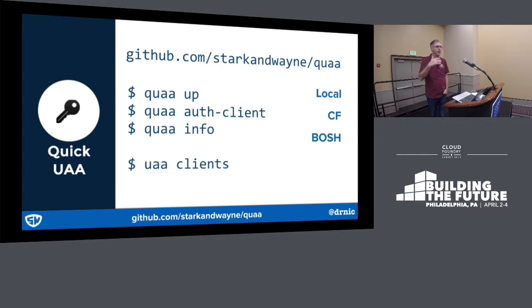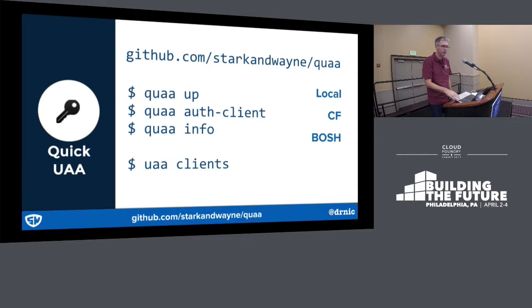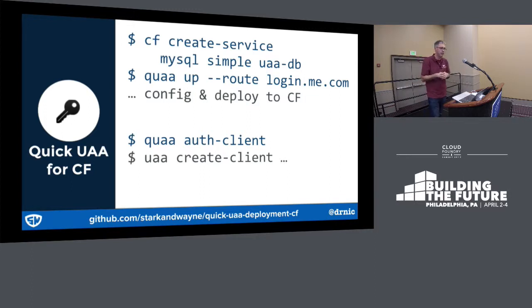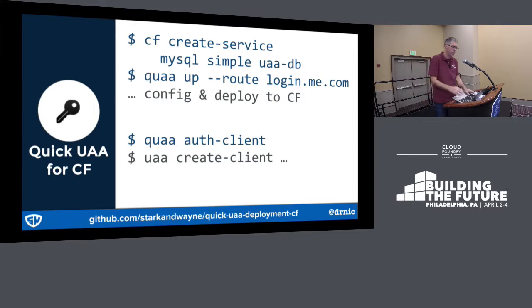It's this up command: QAA up. Then we configure the CLI to be able to talk to it with auth-client, and we find out our credentials with info. It's a nice little CLI. Obviously it encodes many ideas on how to do this. The only dependency is creating the database first — go to your favourite service provider for MySQL or Postgres, provision one, and it just needs to be called UAA-DB. Then you're good to go: everything else is automatic, you run this command, and it works.